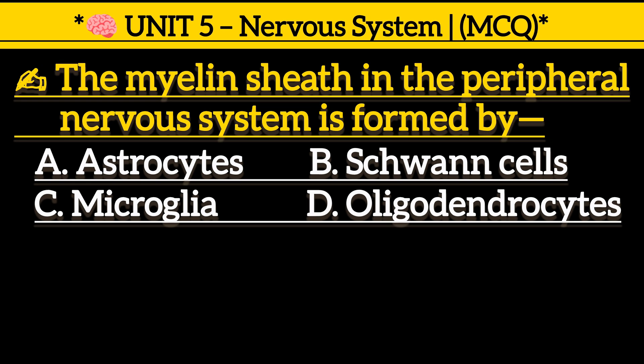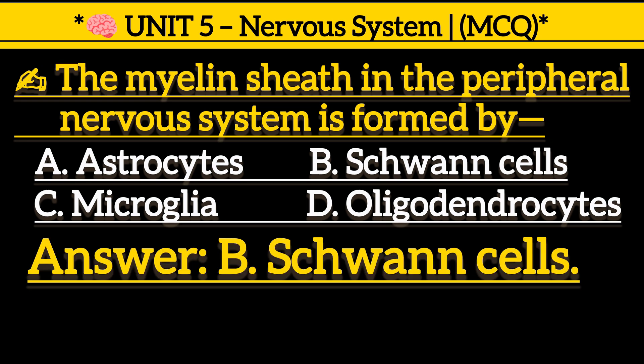The myelin sheath in the peripheral nervous system is formed by: Option A, astrocytes. Option B, Schwann cells. Option C, microglia. Option D, oligodendrocytes. Correct answer is Option B, Schwann cells.